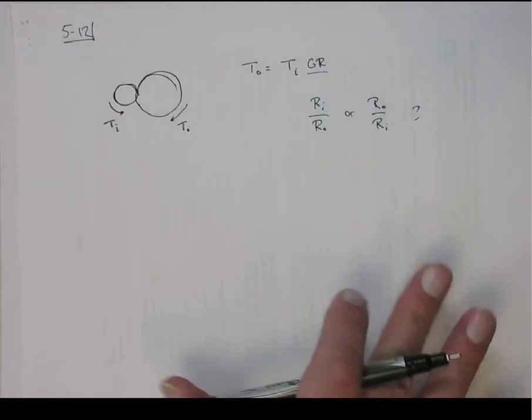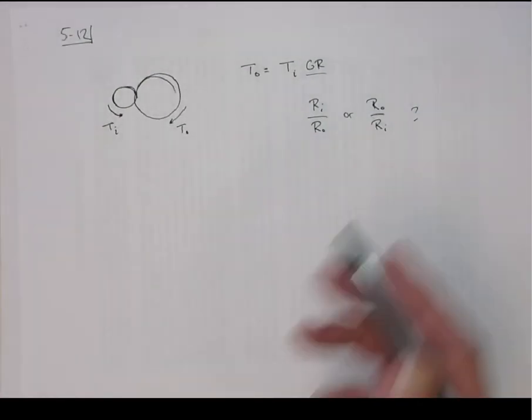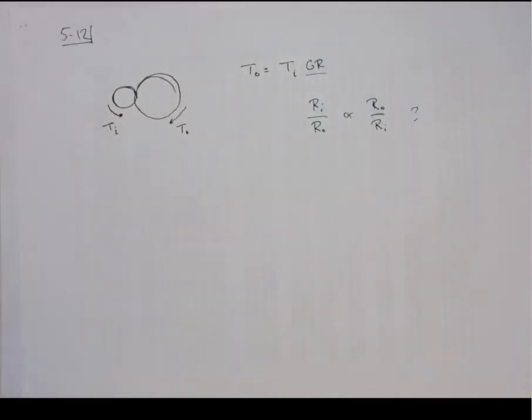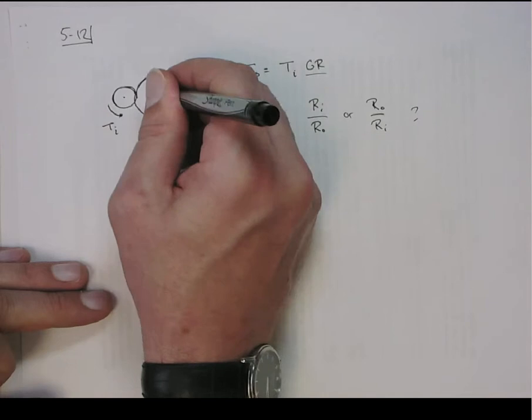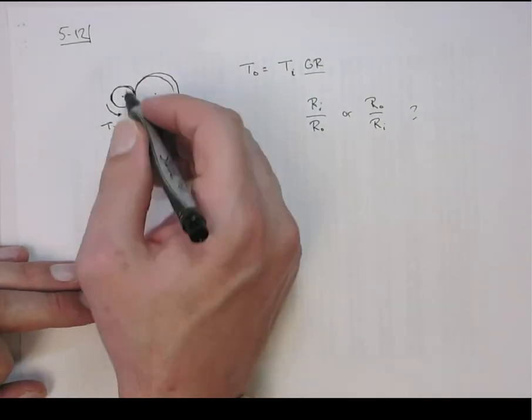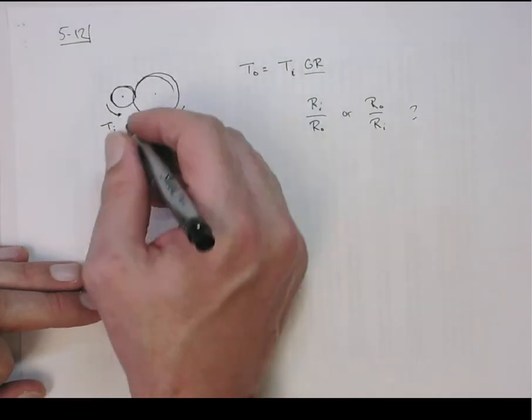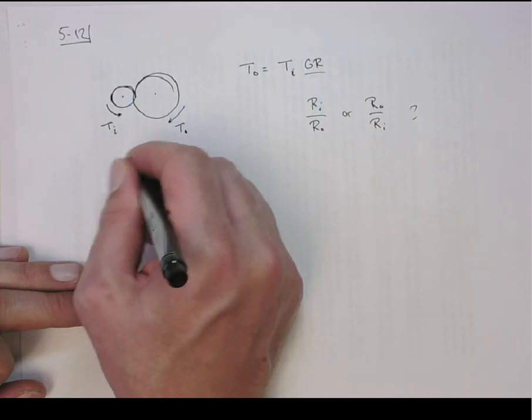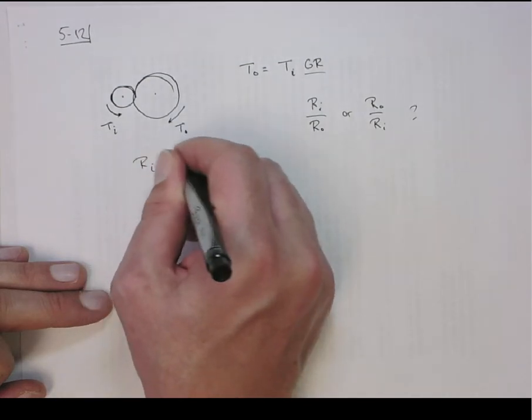I always forget, but the easy way to remember is to think of it physically, at least this is the way I do it. So in this situation, the driving one is smaller than the outer one. So the angular speed of the inner one is going to be greater than the angular speed of the outer.